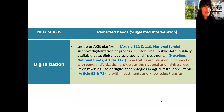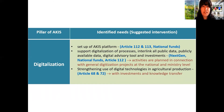The third pillar is digitalization. We identified: set up of ACIS, support for digitalization of processes, interlinking all public data, and strengthening the use of digital technologies in agricultural production.